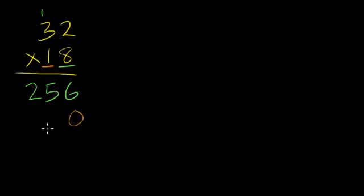Or you could say 1 times 2 is 2, but you're putting it in the tens place, so you still get 20. Then 1 times 3 is 3. There's nothing to add here. So 10 times 32 is 320.